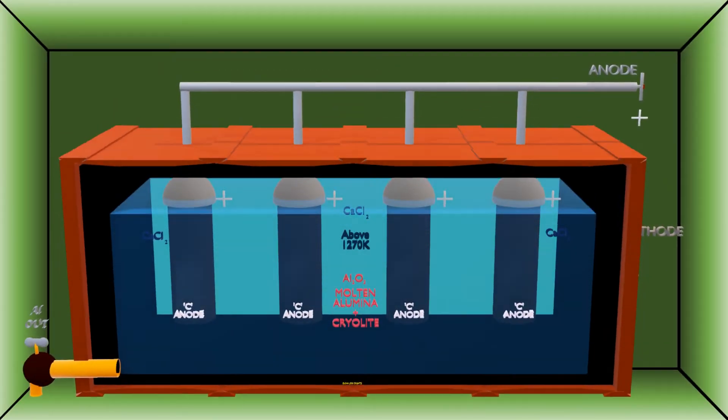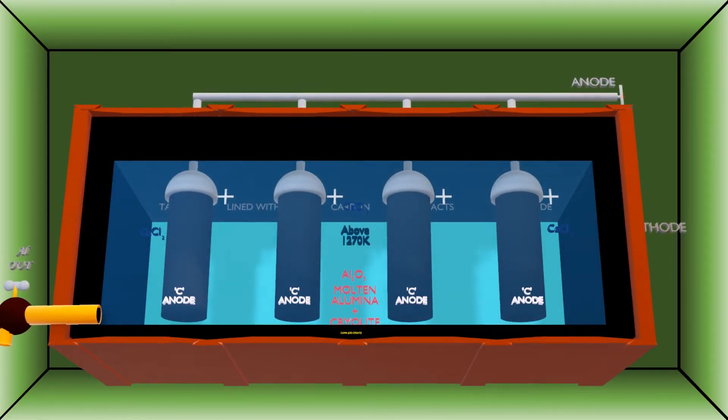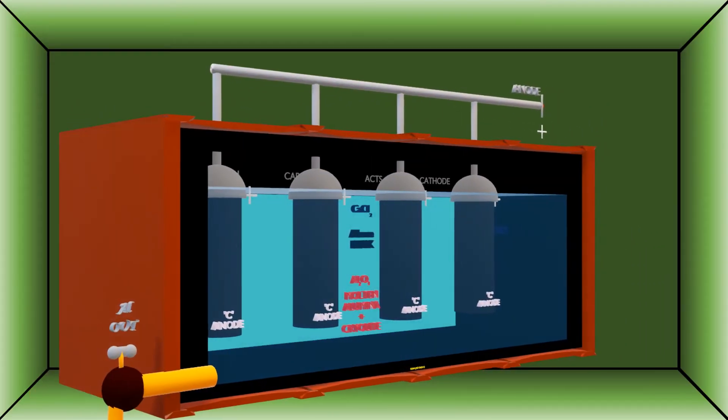In this method, electrolysis is carried out in an iron tank lined with carbon, which acts as a cathode.